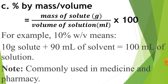Next, percentage by mass by volume (W/V) equals mass of solute in grams divided by volume of solution in mL, multiplied by 100. Example: 10% W/V means 10 grams of solute dissolved in 90 mL of water so that the solution is 100 mL. This type of percentage is commonly used in medicine and pharmacy.